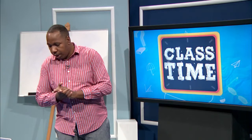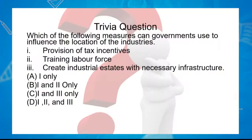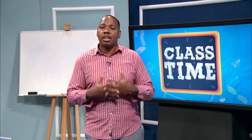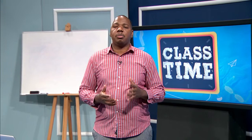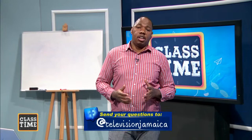Another quick question: which of the following measures can governments use to influence the location of industries? The answer is D. We have to end it there today. We've come to the end of the lesson. If you have any questions, send them to Television Jamaica's Facebook page, at Television Jamaica, or Instagram at Television underscore Jamaica, or use the hashtag TVJClassTime. Up next, we have CAPE Management of Business. Thank you for joining us.